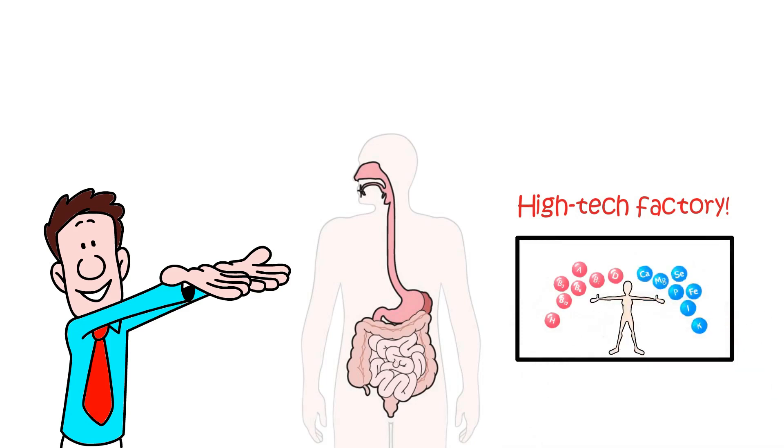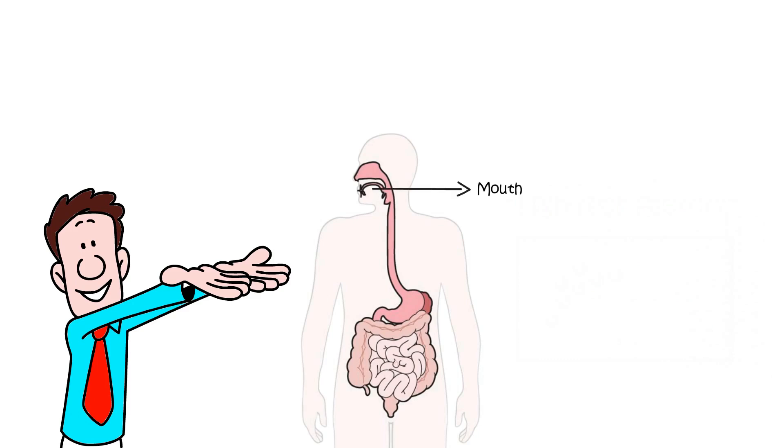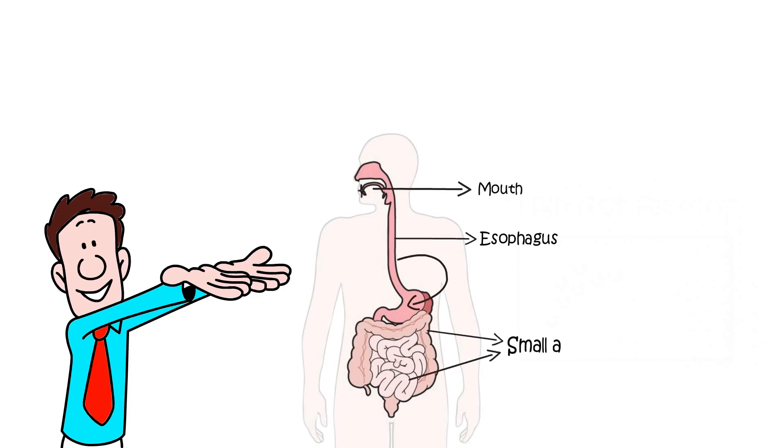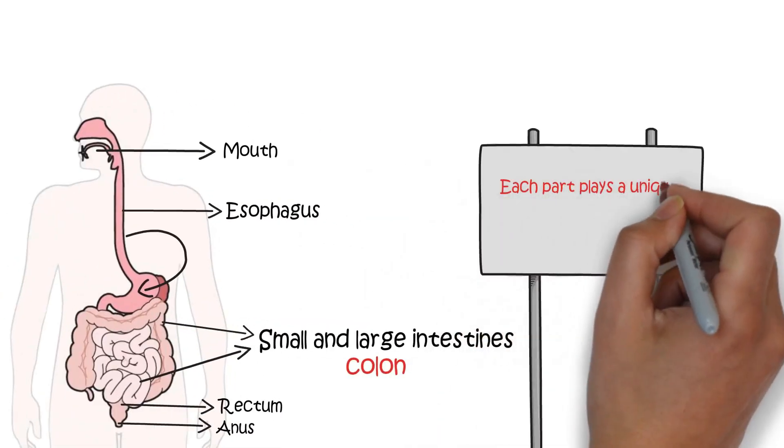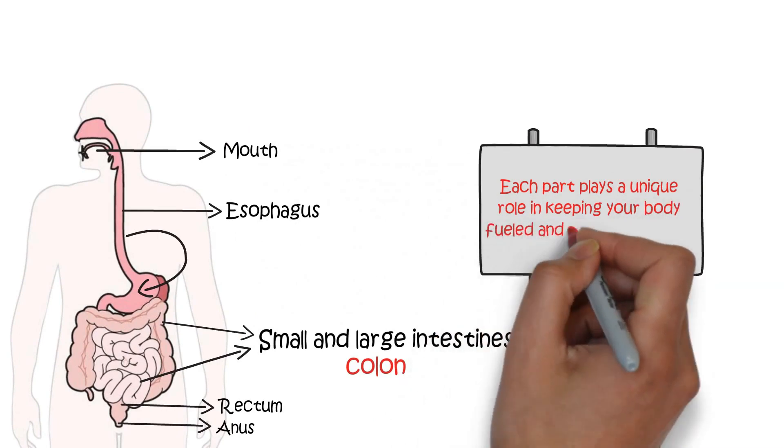This incredible system includes a whole range of organs, from your mouth and esophagus to your stomach, small and large intestines, also known as the colon, rectum, and anus. Each part plays a unique role in keeping your body fueled and running smoothly.